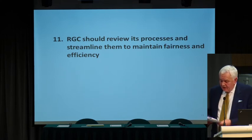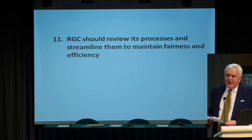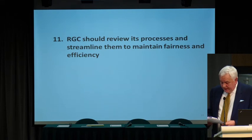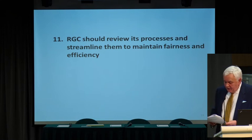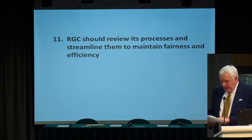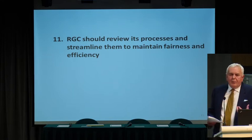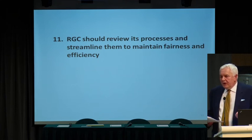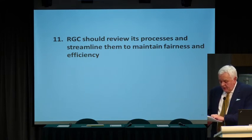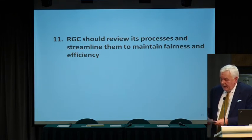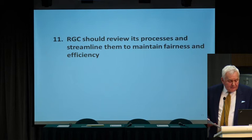Recommendation ten: RGC should review its processes and streamline them to maintain fairness and efficiency. Problems identified by respondents included the number of application cycles per year, the length of time to receive a decision, declaration and associated disciplinary processes, and the online portal for submission. These operational issues will be reviewed in Phase 2 to ensure they are streamlined and as effective as possible. Those were the eleven recommendations.